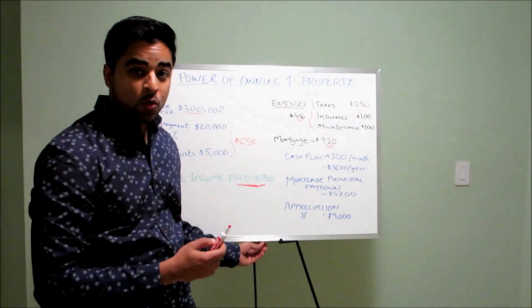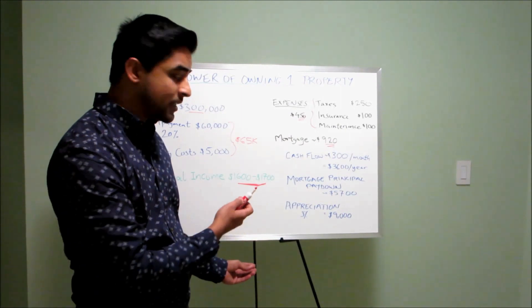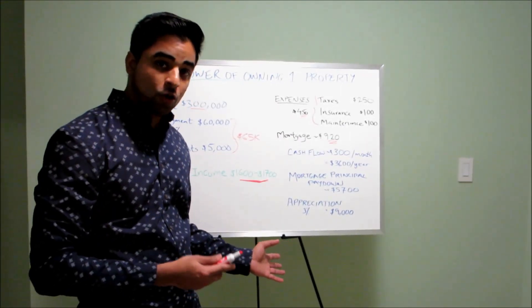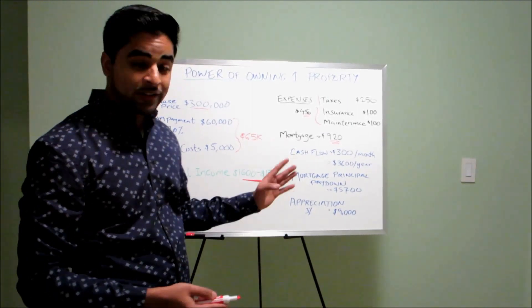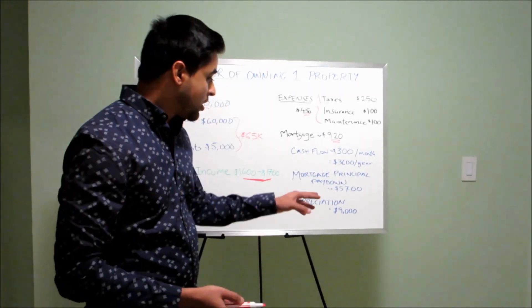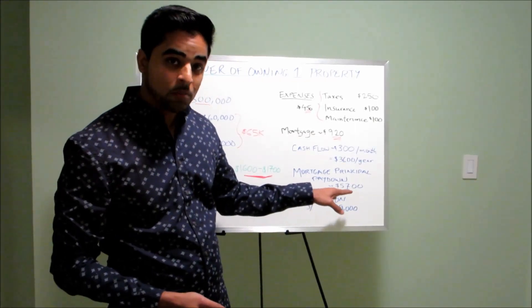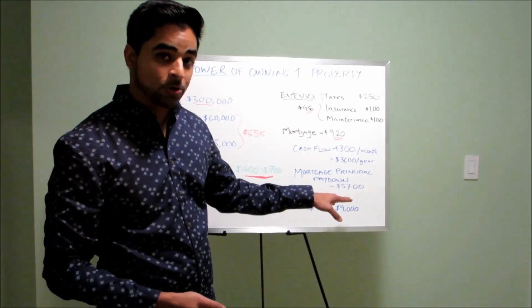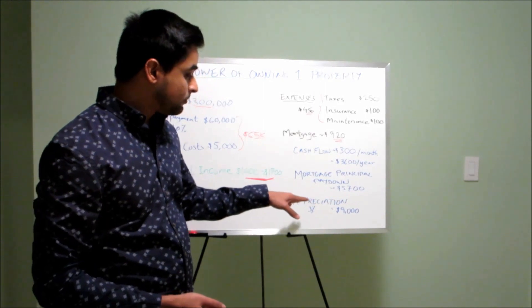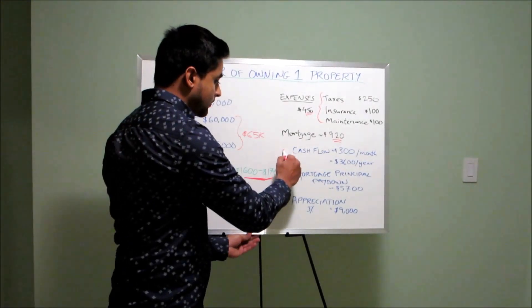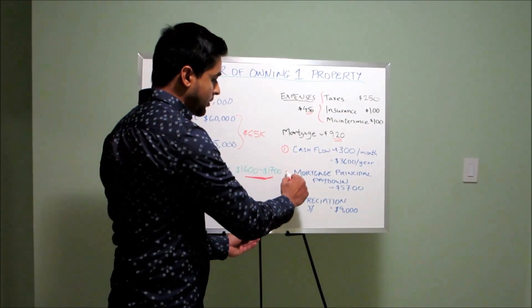The good thing about the mortgage is that about 40% of your mortgage goes towards the principal. So in one year time frame, you're going to have about $5,700 of mortgage principal paid on your loan. So that's the other benefit. This is the first way to make money.